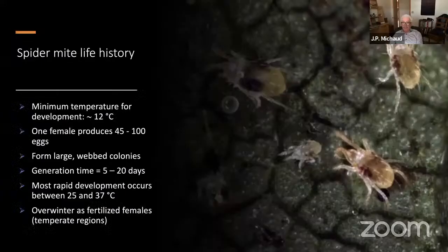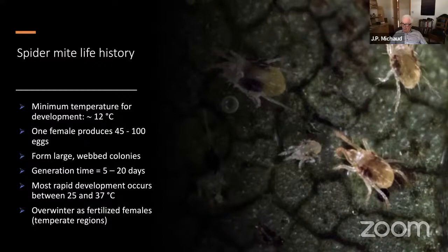Spider mite generation time can be as short as five days in hot weather — egg to reproductive adult. So there's a strong temperature effect on infestation intensity, the speed at which the population can grow, and thus the crop damage potential. In subtropical regions, spider mites will remain active year round provided they have some suitable host plant to feed on. In temperate regions like Kansas, they overwinter usually as fertilized females in a state of dormancy.